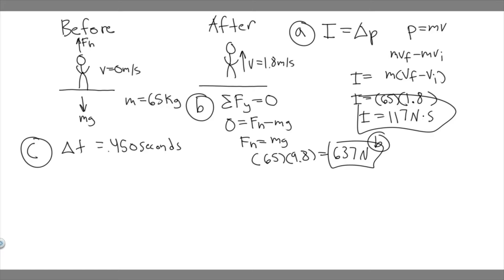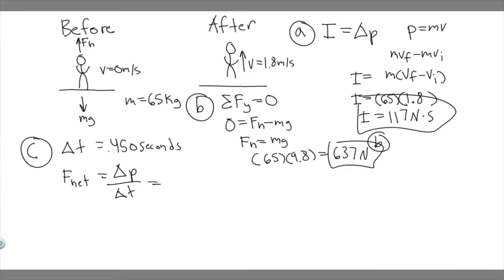Now let's do C. We're trying to find the total average force exerted by the floor on the player, given the contact time is 0.45 seconds. The first thing we want to do is find the net force — the force the player jumps up with. The net force equals the change in momentum over the change in time. The change in momentum is just the impulse, which is 117. So: 117 divided by 0.45 equals 260 newtons as the net force.